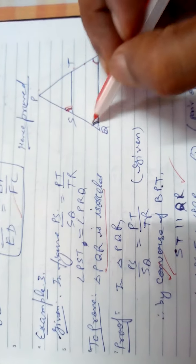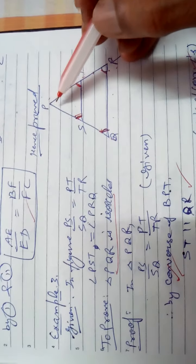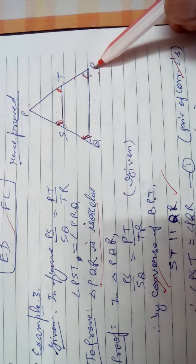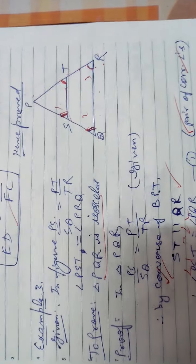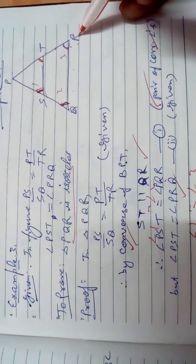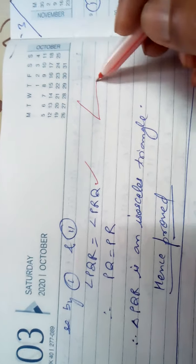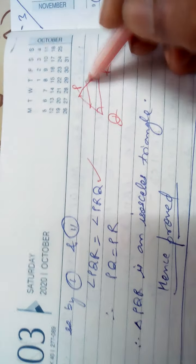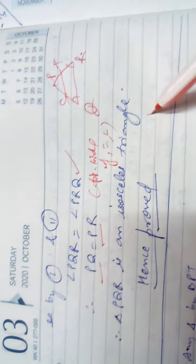Since ST is parallel to QR, the corresponding angles are equal: angle PST equals angle PQR. But it is already given that angle PST equals angle PRQ. So angle PQR equals angle PRQ, meaning angle Q equals angle R. If angle PQR equals angle PRQ, then the opposite sides are also equal: PQ equals PR. Therefore triangle PQR is an isosceles triangle. Hence proved.